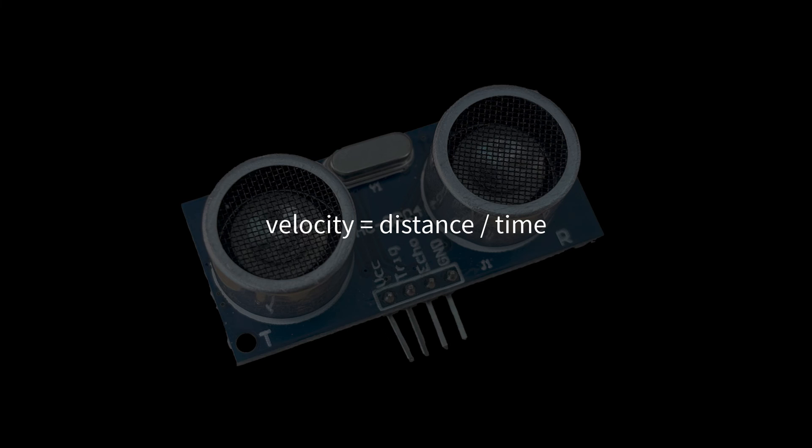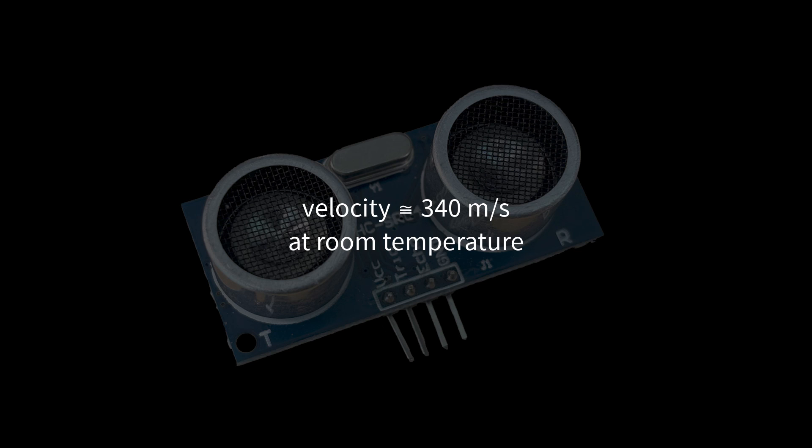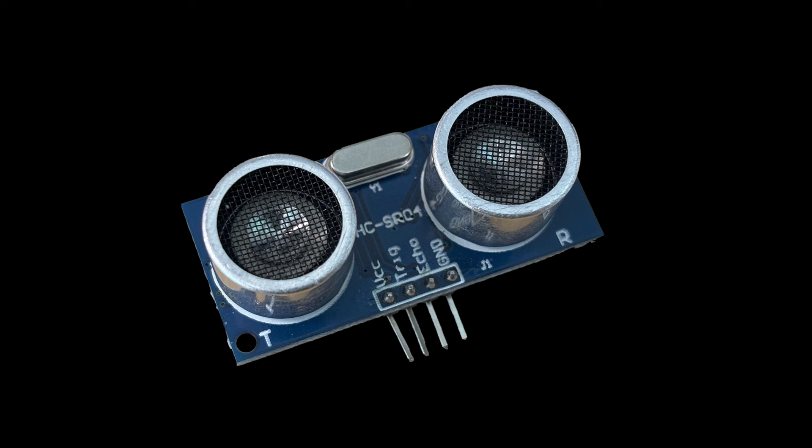Velocity equals distance divided by time, and the speed of sound in air is constant if temperature doesn't change, which is a reasonable assumption for us to make in most lab conditions. Rearranging variables, distance equals the amount of time the echo pin returns a high signal, times the speed of sound divided by two. The divided by two is due to the round trip the sound wave makes from the ultrasonic sensor to the obstacle and back. The speed of sound in air is nominally 340 meters per second at room temperature. Note that this value is not valid at hotter or colder temperatures. The amount of time that the signal is high will of course be related to the IO clock frequency and the prescaler as previously described.